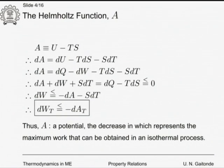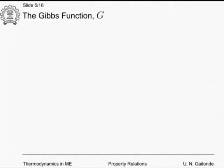The last of the energy functions is the Gibbs function, which is more important and more celebrated than the Helmholtz function. It is defined as G = U + PV − TS, meaning everything is put into it — U, PV, TS, all properties included. Using the definition of enthalpy, it can also be written as G = H − TS.